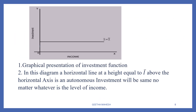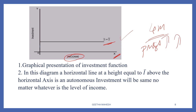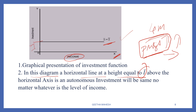Dear students, when they ask for investment function along with consumption function for four marks, don't forget to draw the investment diagram. The investment curve is drawn parallel to the x-axis, meaning investment remains constant whatever the level of income. The horizontal line at height I̅ above the horizontal axis represents autonomous investment, which remains the same no matter what the level of income is.